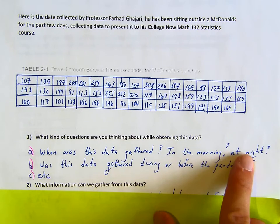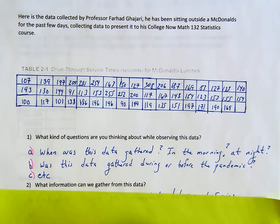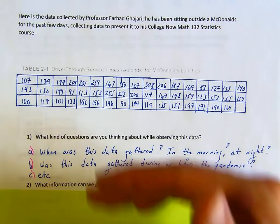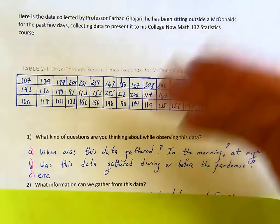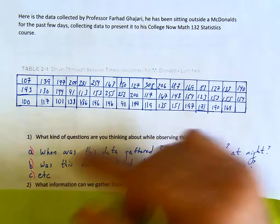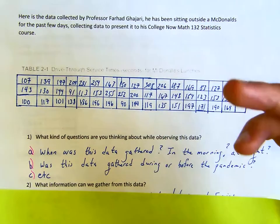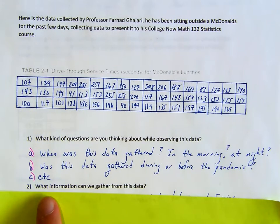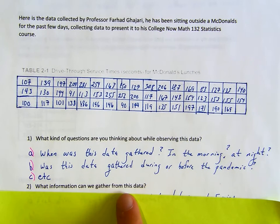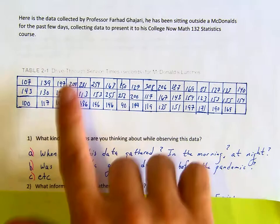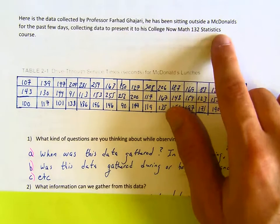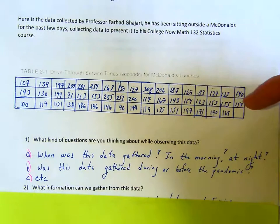For me, I was thinking: when was this data gathered — was it in the morning, was it at night? Was this data gathered during or before the pandemic? There are so many questions you can get from this. Now for the next question: what information can you gather from this data? We know the scenario — we're outside McDonald's — what can you infer from the times given?